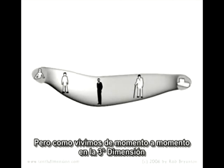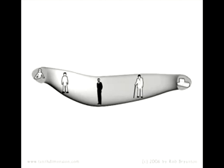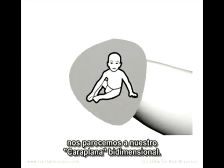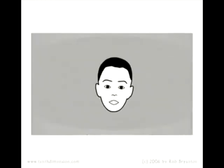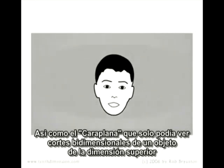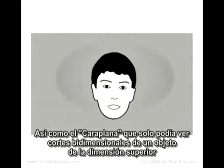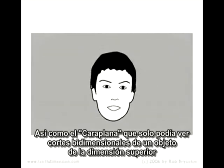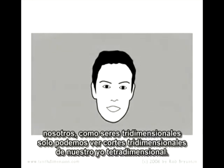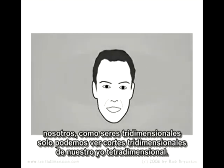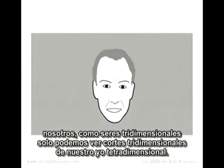But because we live from moment to moment in the third dimension, we're like our second-dimensional flatlanders. Just like that flatlander who can only see two-dimensional cross-sections of objects from the dimension above, we, as three-dimensional creatures, can only see three-dimensional cross-sections of our fourth-dimensional self.